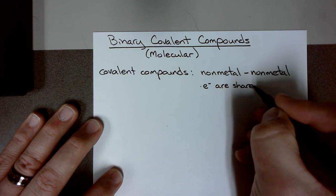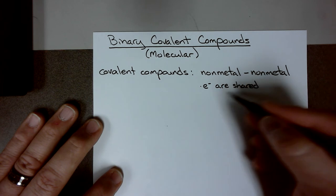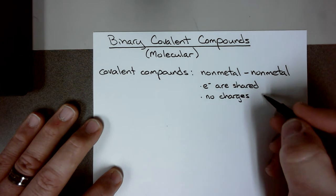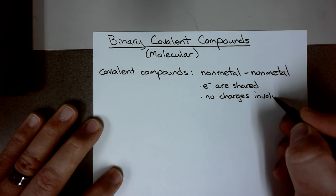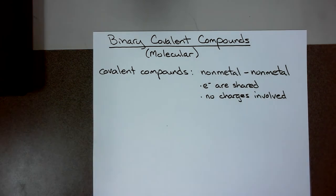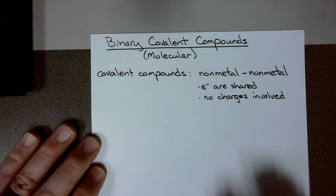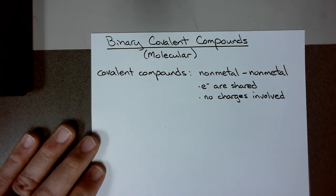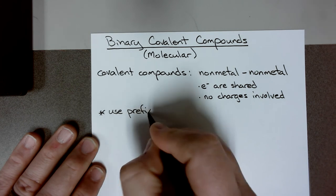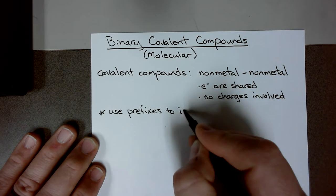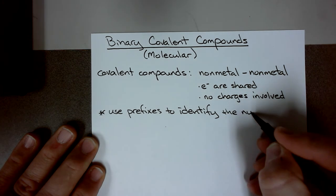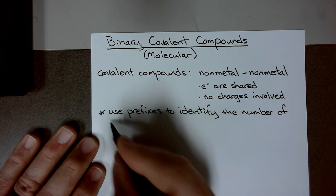Because they're shared, there is no charges involved. Why is it important that I state this? Because with ionic compounds, it's the charges that indicate to us or determine the number of atoms in the molecule. With covalent compounds, how do we determine the number of atoms in the molecule? We use prefixes.